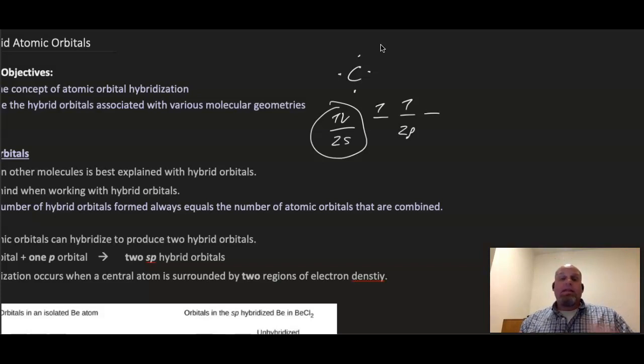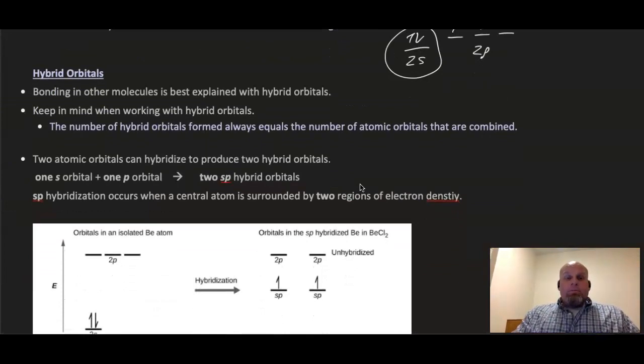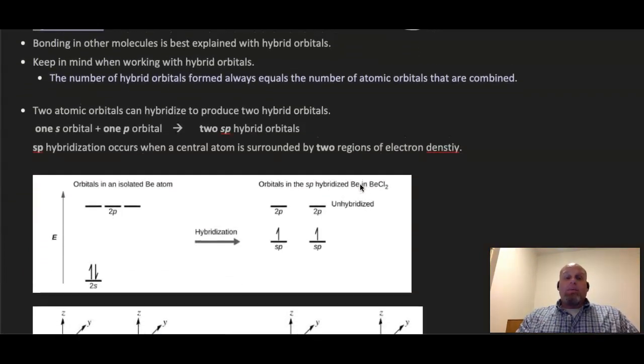So that's where hybrid orbitals come in. Instead of the distinction between 2s orbitals being separate from the three 2p orbitals, those four orbitals are going to hybridize.